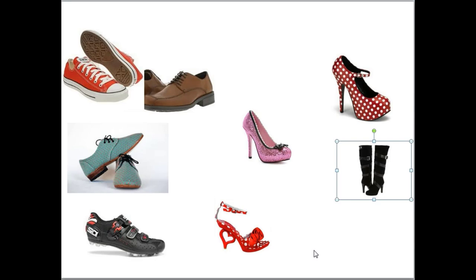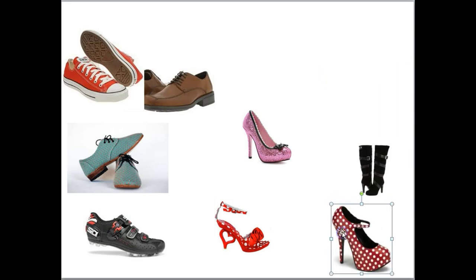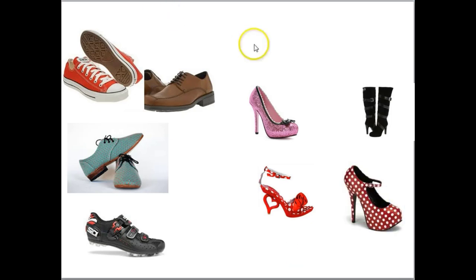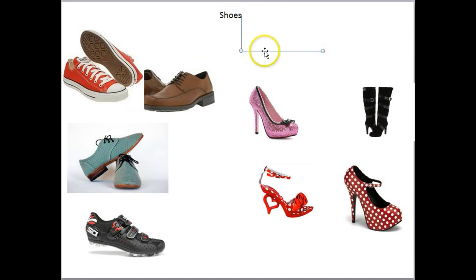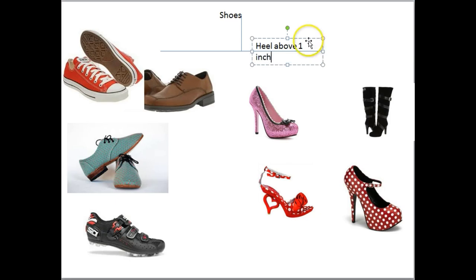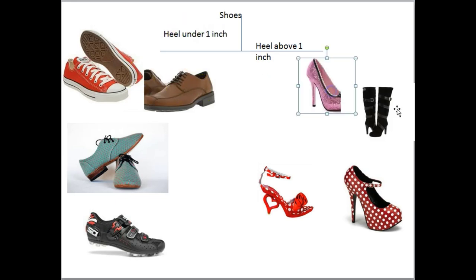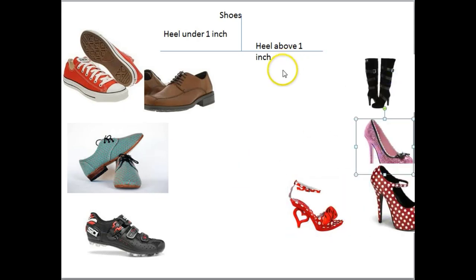Now I need to communicate to people reading this exactly the decisions I'm making and how to break up these groups. I can do this visually in something called a cladogram — a line drawing that we label with our decisions. Starting at the top with 'shoes,' we have two choices: go right if the shoe has a heel above one inch, go left if it has a heel under one inch. It's very simple, obvious, and quantifiable rather than qualifying.